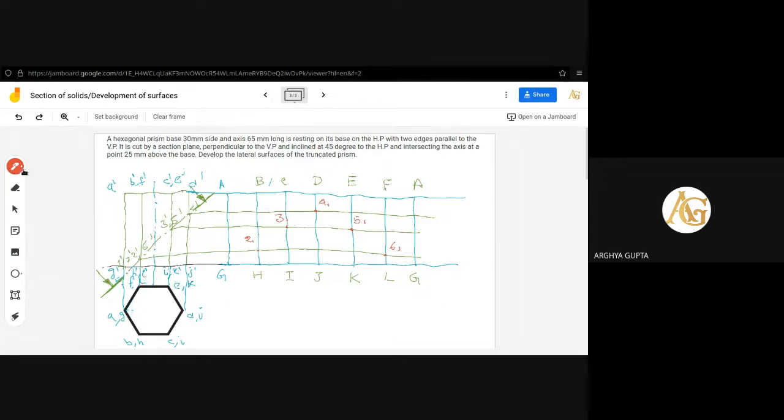It will be on the base, so we have to take the measurement. It is on G and H. Take the measurement from G to one, so that will be G1. Take the length G1 and cut it here, and take the length G to seven.